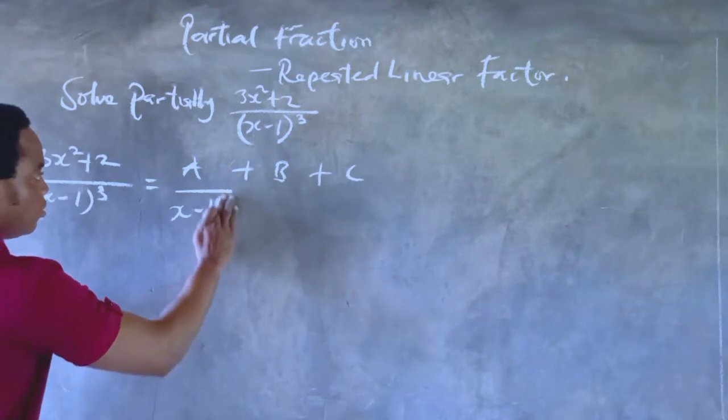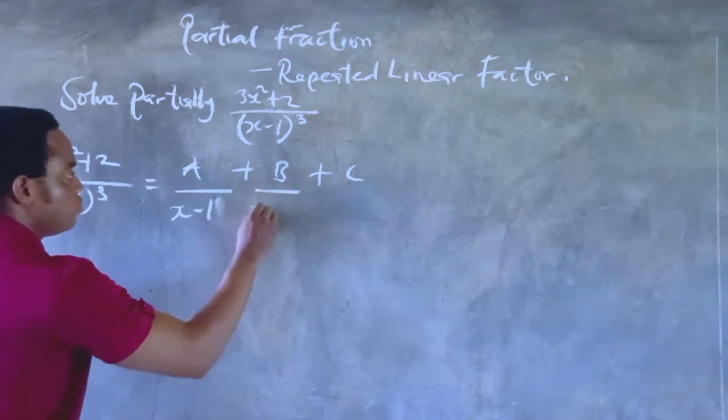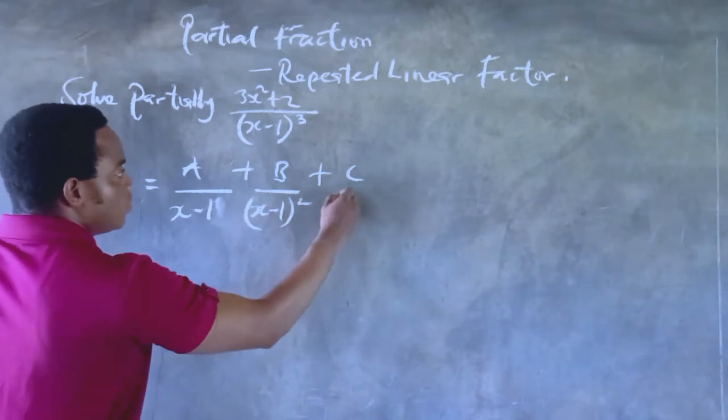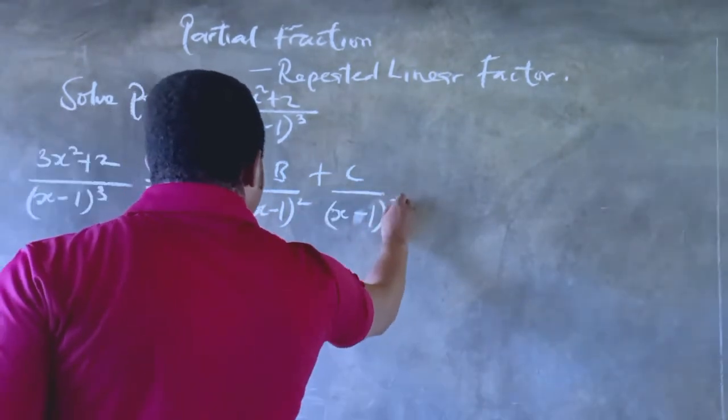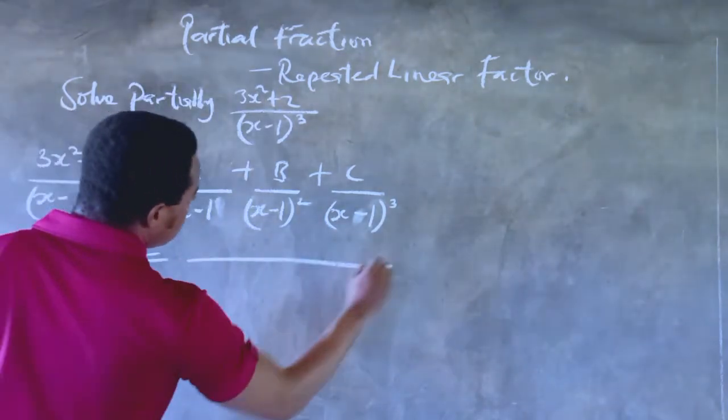And we are going to express them on the other side like this. So there will be A all over (x minus 1), B all over (x minus 1) squared, and C all over (x minus 1) raised to power 3. So this is how we should do it.